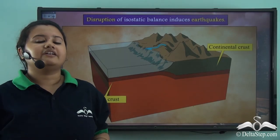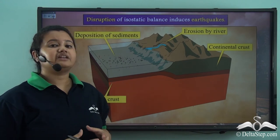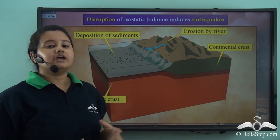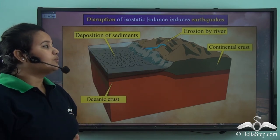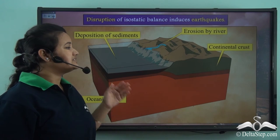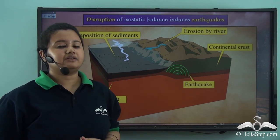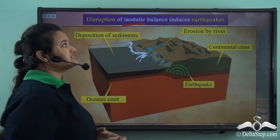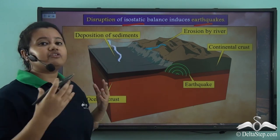Natural forces like rivers, wind, and glaciers erode the landforms when they flow over them. These eroded sediments are deposited on the ocean floor. Due to continuous deposition of sediments, the oceanic crust thickens while the continental crust becomes thinner. This disrupts the balance between the crust and mantle — that is, it disrupts the isostatic balance — and induces earthquakes.